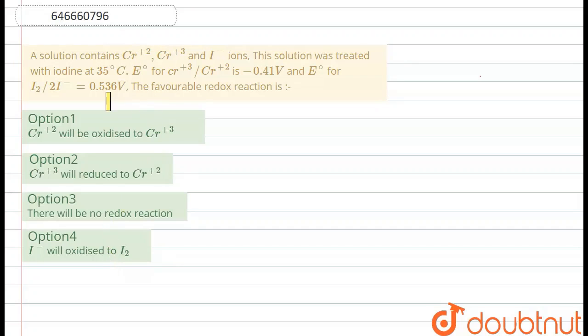The question says that a solution contains chromium 2 plus and chromium 3 plus and iodide ions. This solution was treated with iodine at 35 degrees celsius. E naught for chromium 3 plus to chromium 2 plus is minus 0.41 and for I2 to I negative is 0.536 volt. The favorable redox reaction is to be determined from the four given options.